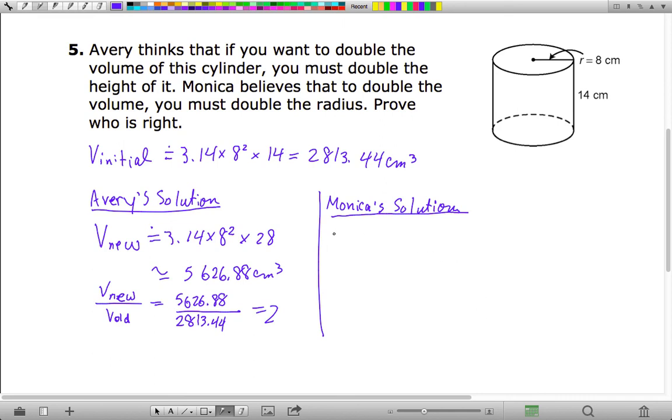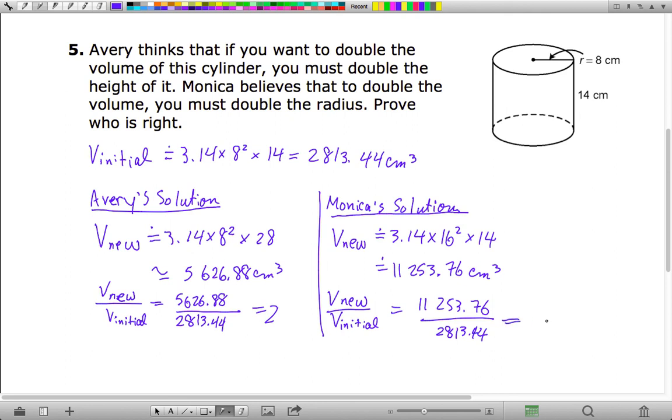Whereas with Monica's solution, the new volume you'd be calculating would be approximately 3.14 times 16 squared times 14, and this would give you 11,253.76 cubic centimeters approximately. So the new volume compared to the initial volume, doing 11,253.76 divided by 2,813.44, you'd get 4.